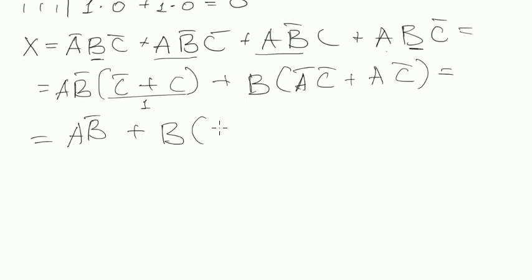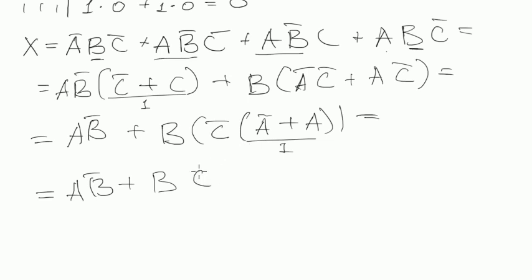Inside brackets we have A̅ plus A, and we know that this one is one. So we rewrite the whole thing: AB̅, I like this path much more, and here we have BC̅. Woo-hoo! Yes, we've done that.